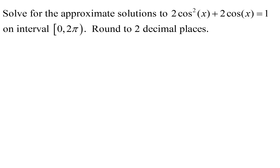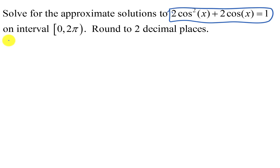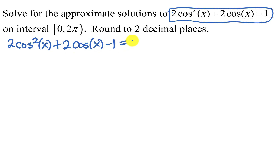We want to solve for the approximate solutions to this trig equation on the interval from 0 to 2π, rounding to two decimal places. Looking at the trig equation, there is a squared cosine term and a cosine term, so we'll get everything on one side equal to 0 and see if we can factor. That gives us 2 cosine squared x plus 2 cosine x minus 1 equals 0.